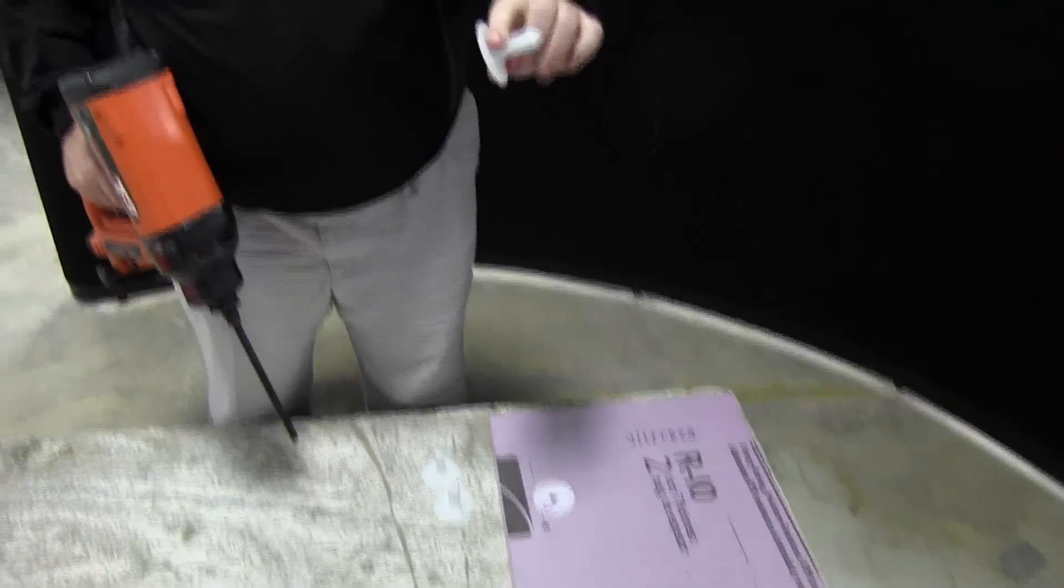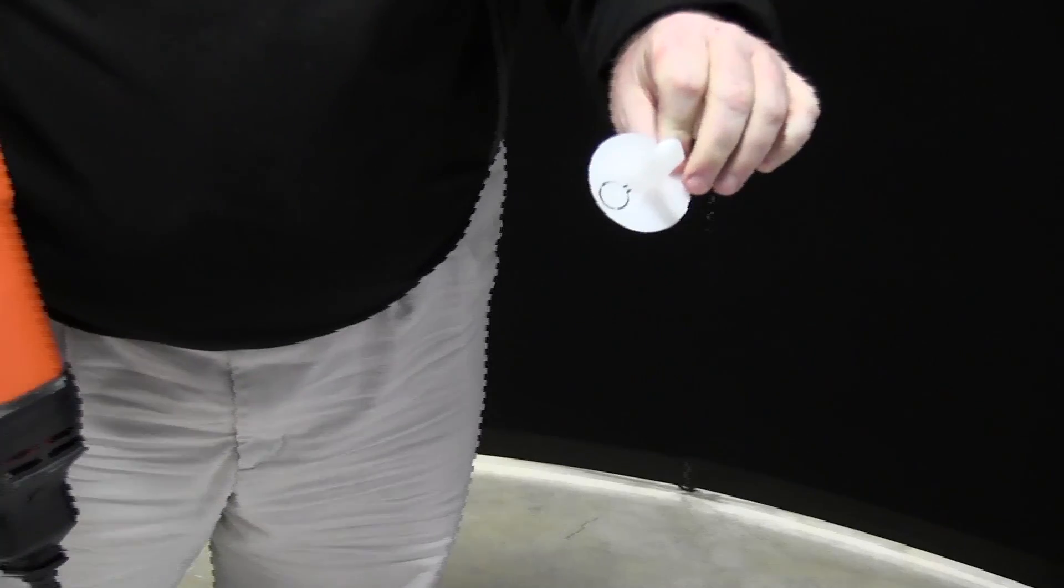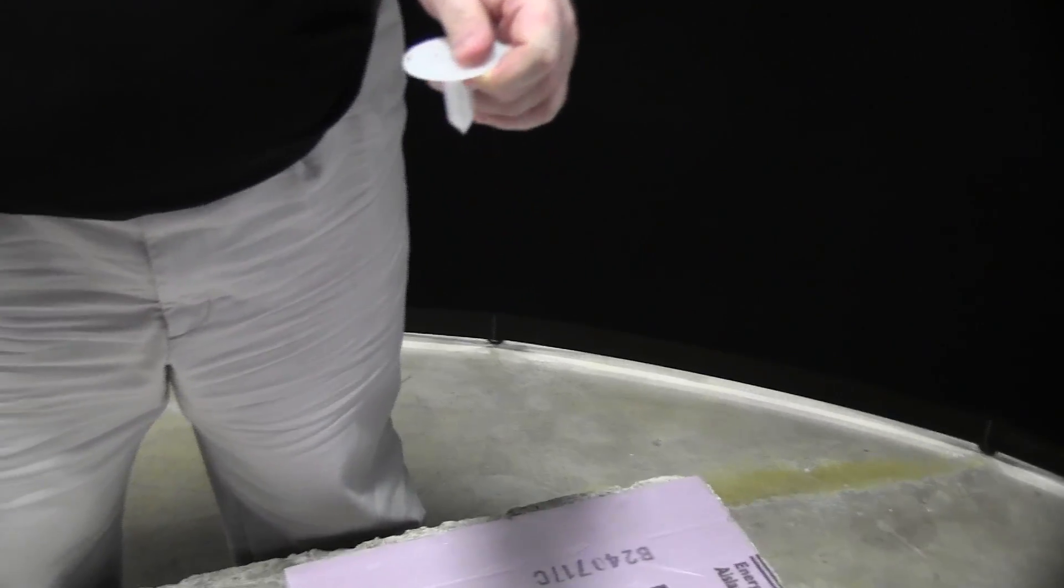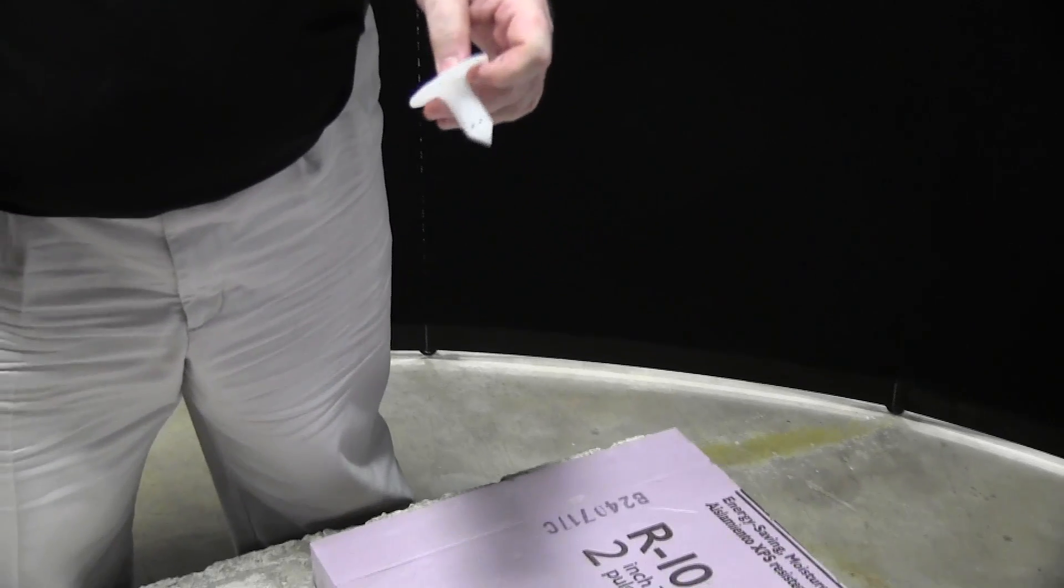The fastener depends upon the size of the insulation. Here, we have two-inch polystyrene insulation that's going onto a concrete slab. Usually, this would be more on a wall or overhead.